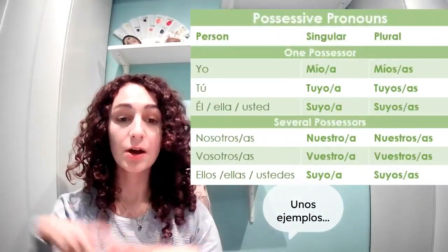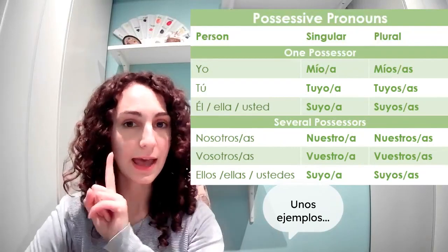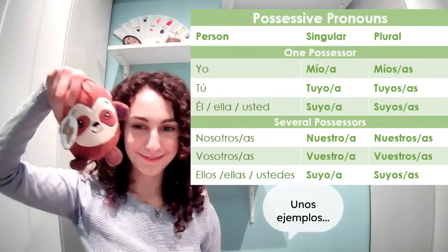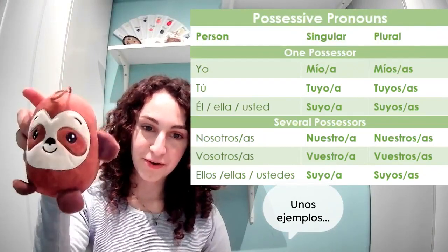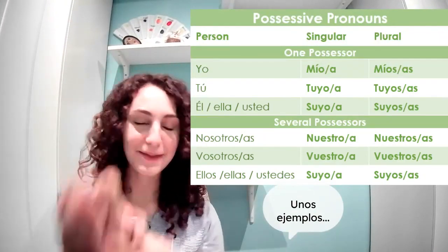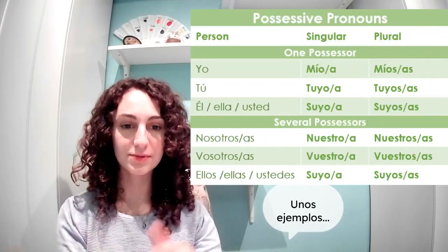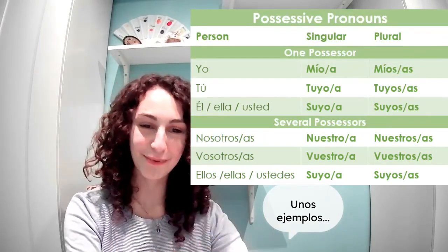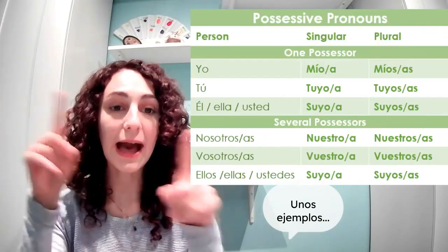Los pronombres — como siempre, tenemos que pensar en la cantidad, pero esta vez también en el género. So we have to think about quantity and gender. Por ejemplo, voy a usar la capybara y el peluche — el perezoso, pero esto es masculino, femenino. Mío — perezoso, mío; capibara, es mía. O, en este caso, mías. So, it depends on quantity and gender. Tú is going to be tuyo or tuya, y tuyos, tuyas; suyo, suya, suyos, suyas; nuestro, nuestra, nuestros, nuestra; vuestro, vuestra, vuestros, vuestras; suyo, suya, suyos, suyas. And remember, these are always going to go after the noun.